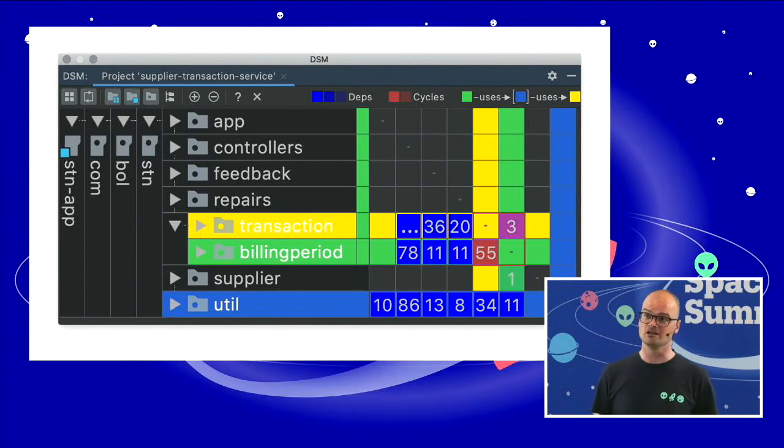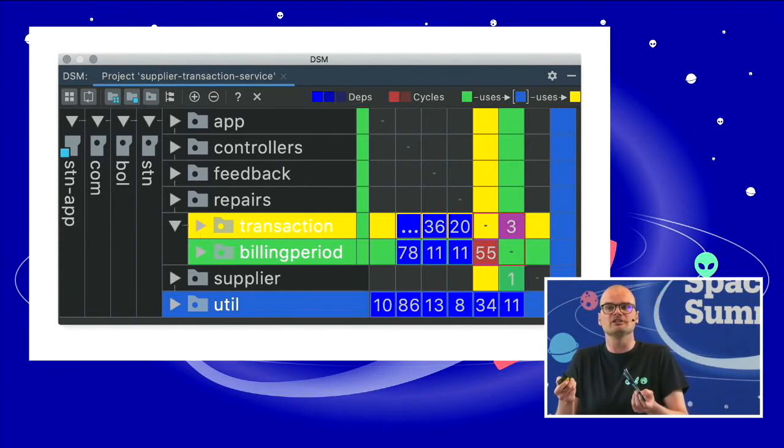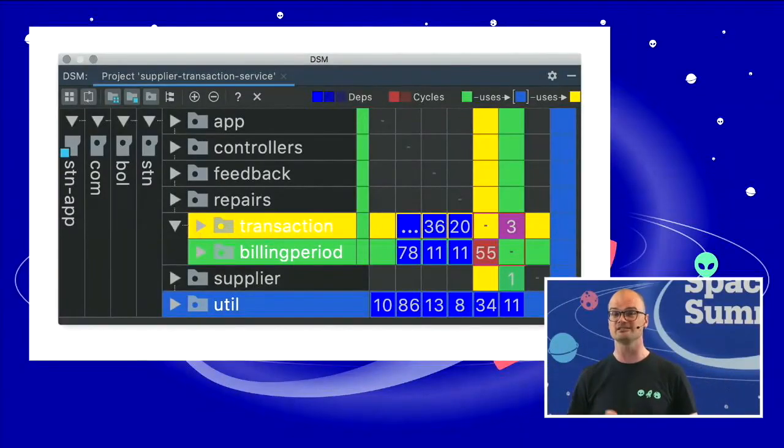Whereas, transaction only uses the billing period three times. Well, I can tell you that's because it's a one to end relationship. And somehow that made it into this dependency graph. So transaction simply says, I belong to this billing period, and nothing else. But if we wanted to be really clean, we could take it out. And transaction would be the place to go solve this. Because then you only have to solve it at three places, and not 55.